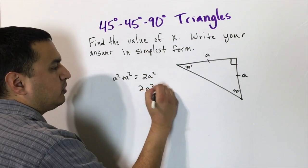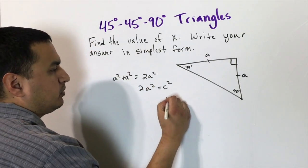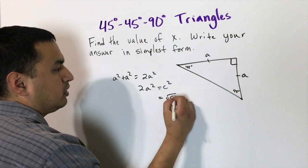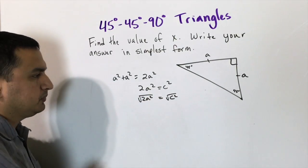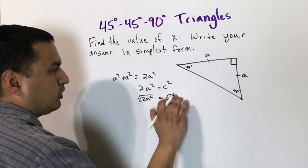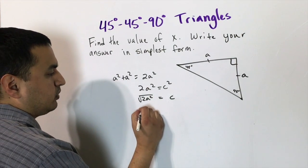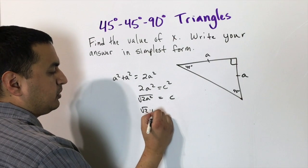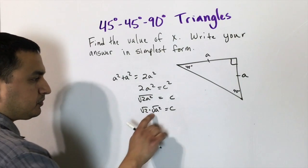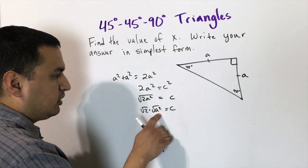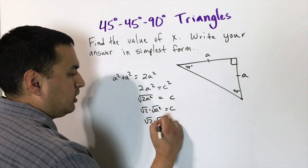We have 2a² = c², so we take the square root of both sides. The square root and square cancel on the left, and on the right we can factor the square root apart: √(2) · √(a²), and since √(a²) = a, the hypotenuse equals a√2.